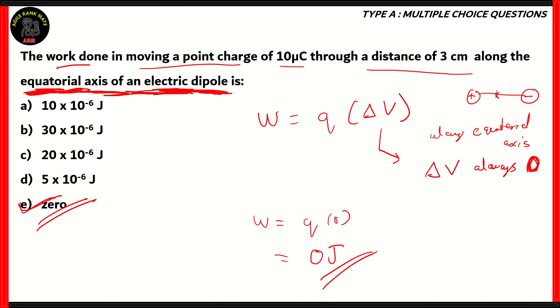Since the net potential is zero, its product with charge will always be zero. Therefore, the work done will also be zero along the equatorial axis of an electric dipole.